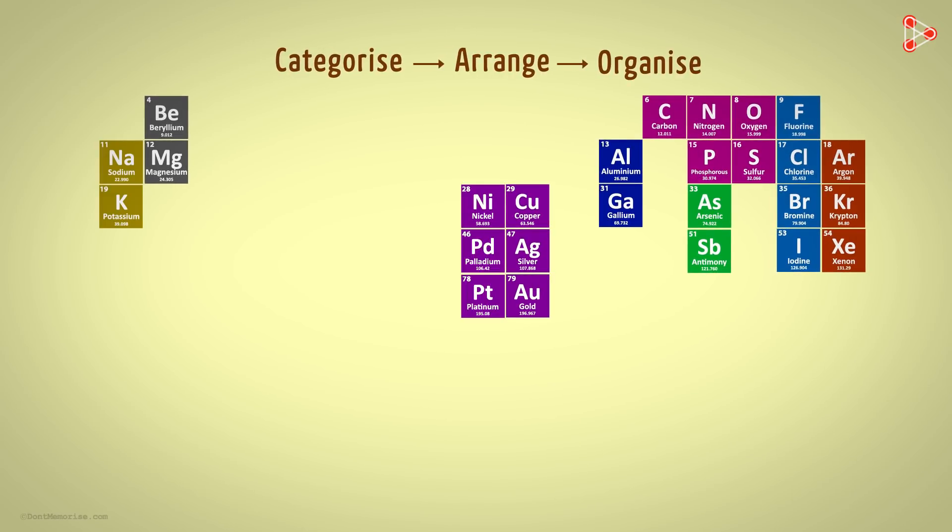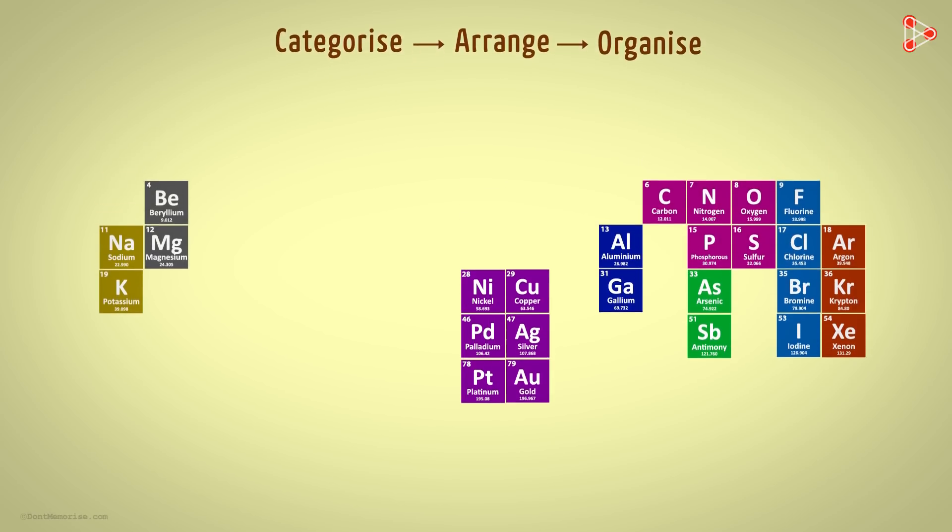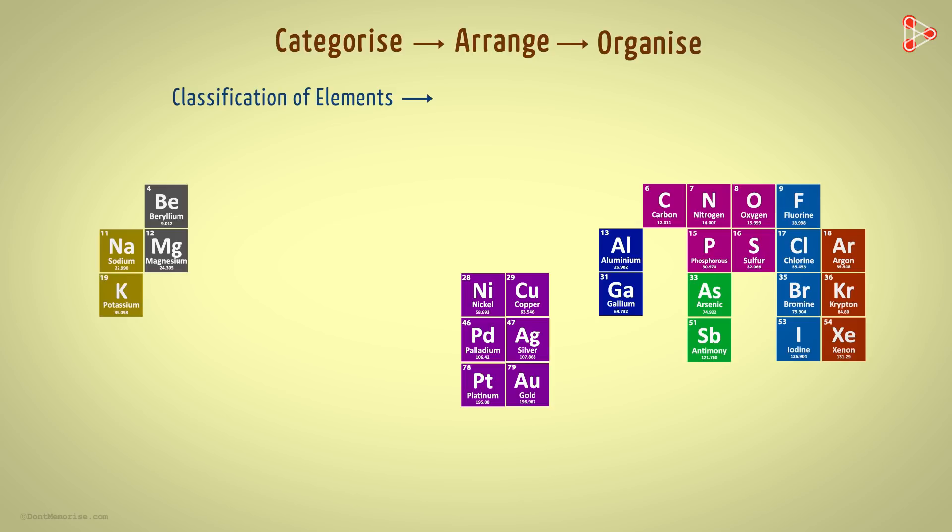This is how we organize the elements. And this process of categorization helps us study the elements with ease. In other words, we've classified the elements here. Classification of elements is categorizing the various elements into groups based on similarities and differences in their properties.